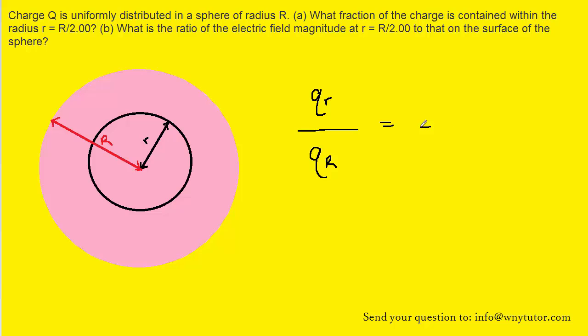would equal the volume of the sphere whose radius is lowercase r divided by the volume of the sphere whose radius is uppercase R. We can set up this proportion because the charge is uniformly distributed and that means that the amount of charge would be proportional to the volume of the sphere.